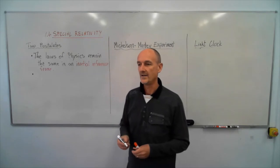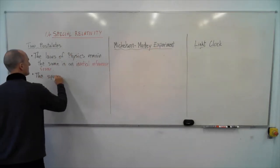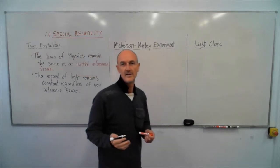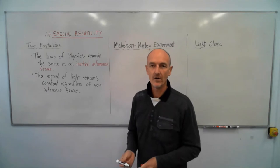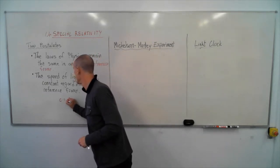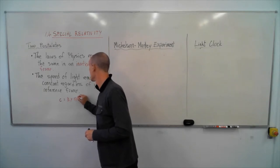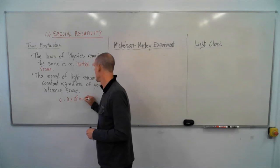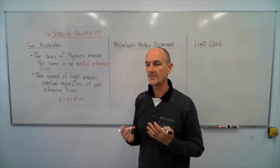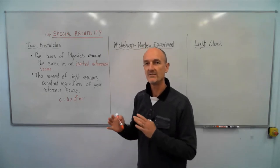The second postulate was that the speed of light remains constant regardless of your reference frame. We know that the speed of light is given the symbol small c and it has a value of 3 times 10 to the power of 8 metres per second. But when you consider that concept a little bit more deeply, what you start to realize is that's actually quite a remarkable statement. No matter what your reference frame is, the speed of light will remain constant.